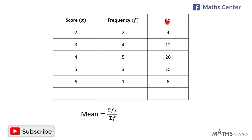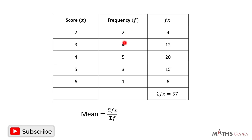We now have all the fx values. To get sigma fx — the sum of fx — we add them all: 4 plus 12 plus 20 plus 15 plus 6, which gives us 57. For sigma f we add all the f values: 2 plus 4 plus 5 plus 3 plus 1, which gives us 15. So the mean score equals sigma fx (57) divided by sigma f (15), which gives us 3.8. The mean score is 3.8.